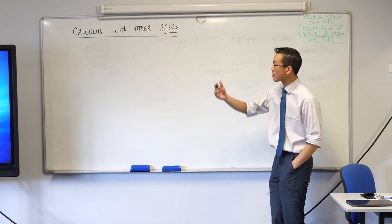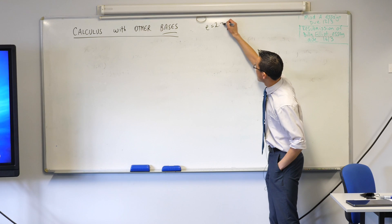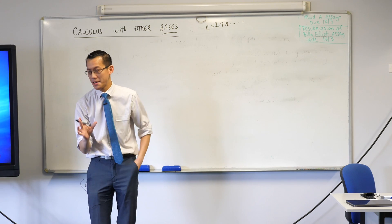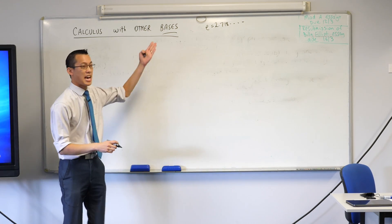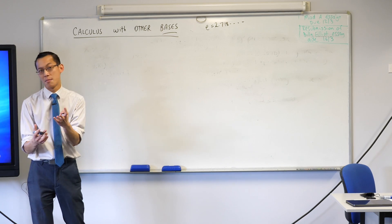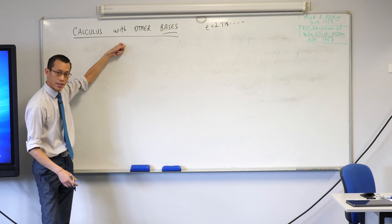This base e that we know is about 2.7 is super important. It makes all the calculus go super nice, right? But of course we don't always have that base. We sometimes have 2 or 10 or whatever number you like. So how do we do the calculus with this?